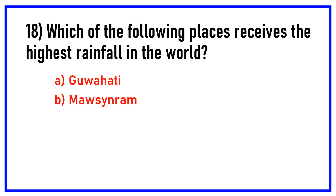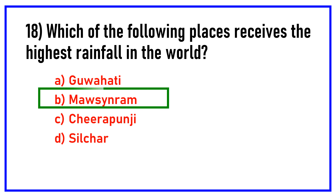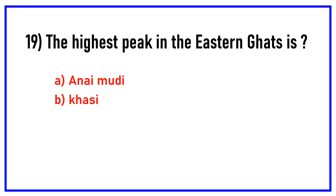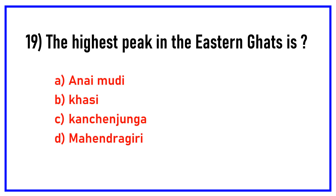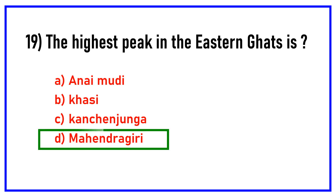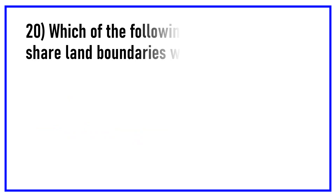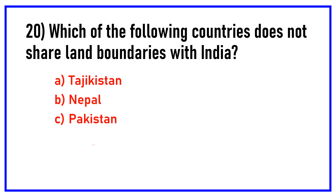Which of the following places receives the highest rainfall in the world? Options are: Gauhati, Mawsynram, Cherrapunji, Silchar. Answer: Mawsynram. Which of the following countries does not share land boundaries with India? Options are: Tajikistan, Nepal, Pakistan, Bangladesh. Answer: Tajikistan.